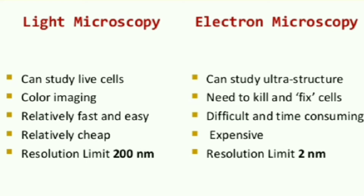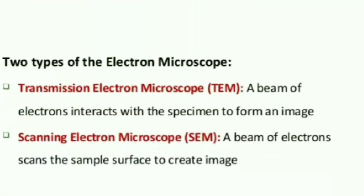Light microscopy is relatively fast and easy, whereas electron microscopy is difficult and time-consuming. Light microscopy is cheap whereas electron microscopy is expensive. The resolution of light microscopy is 200 nanometers whereas the resolution of electron microscopy is 2 nanometers.